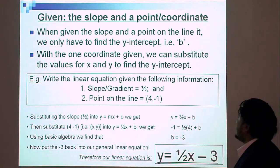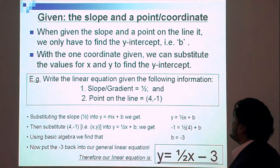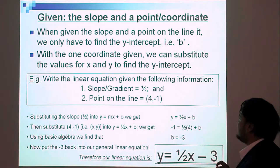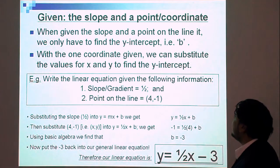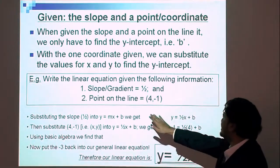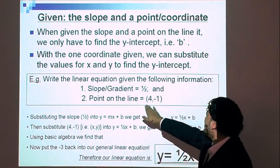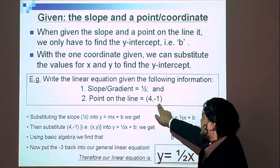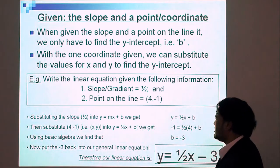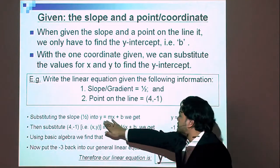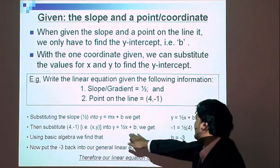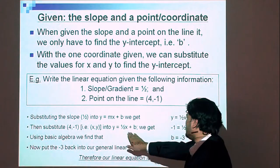What if we are given the slope and a point — a coordinate? When given the slope and a point on the line, we only have to find the y-intercept, that is b. With the one coordinate given, we can substitute the values for x and y to find the y-intercept. Write the linear equation given: the slope is one-half, and the point on the line is (4, negative 1), meaning x equals 4 and y equals negative 1. First, substitute the slope into y equals mx plus b.